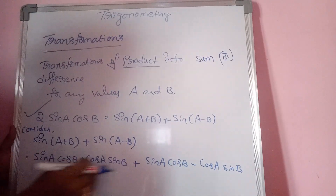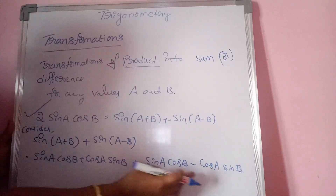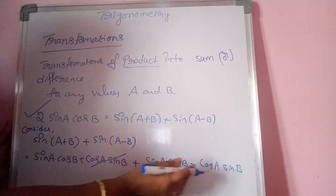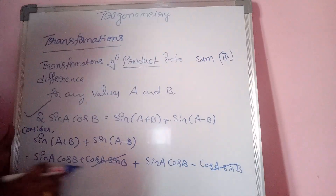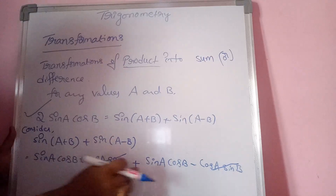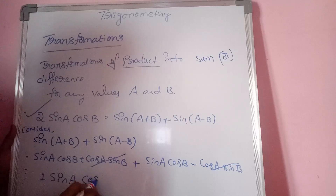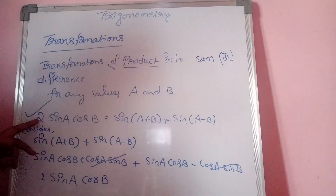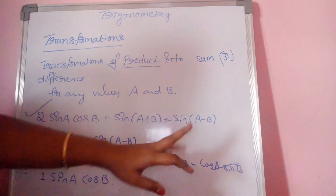So sin A cos B plus sin A cos B plus cos A sin B minus cos A sin B. The cos A sin B terms cancel, and the remaining terms give 1 plus 1, that means 2 sin A cos B. Therefore, 2 sin A cos B is equal to sin(A+B) plus sin(A−B). The remaining three formulas can be calculated similarly.